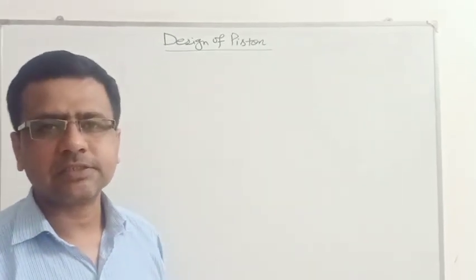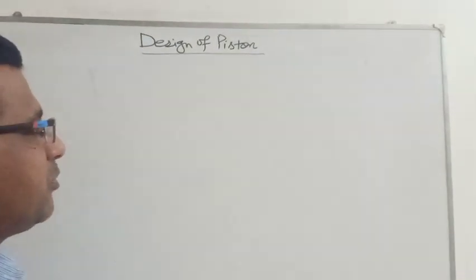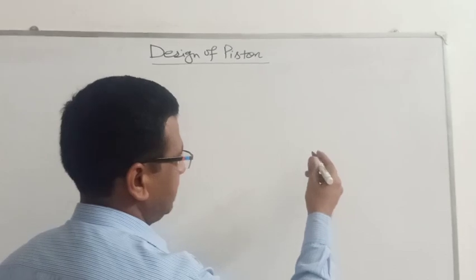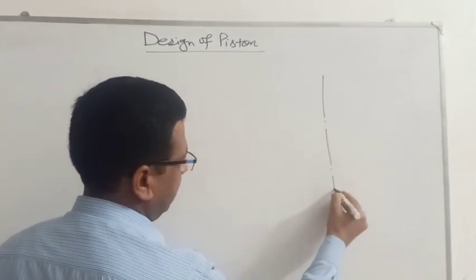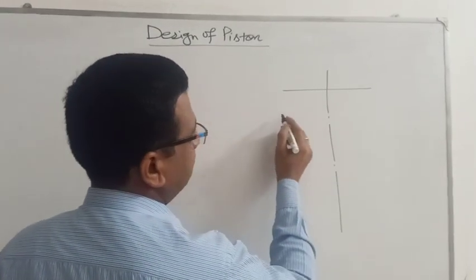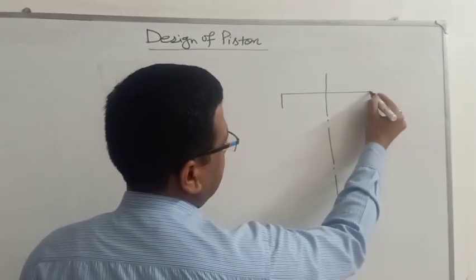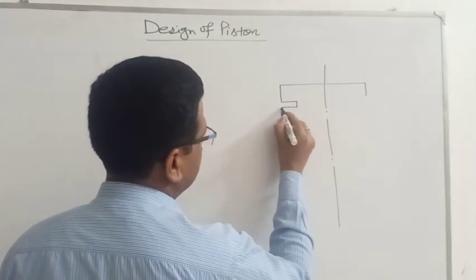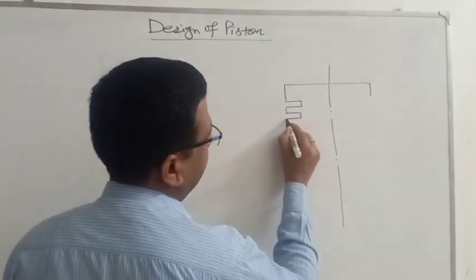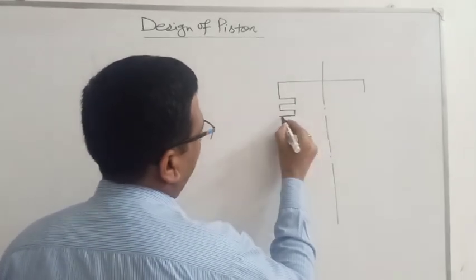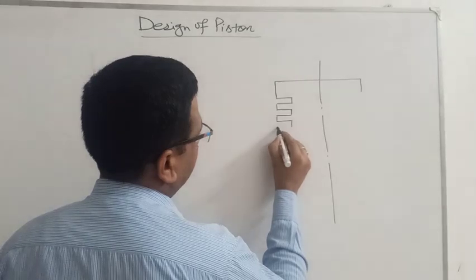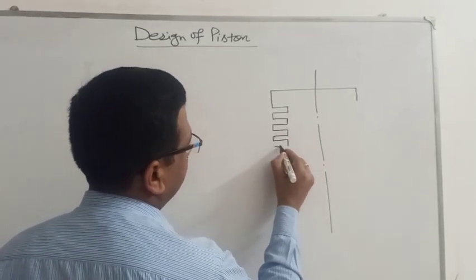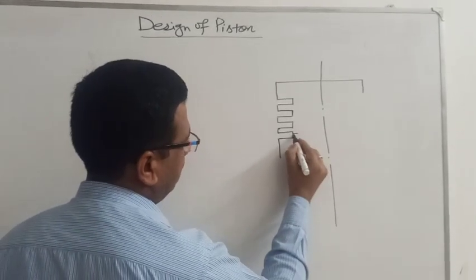Hello friends, today we will discuss the design procedure of a piston. Before we start the design procedure, let's have a look at the various parts of a piston. We are drawing a diagram for the piston. This is the center line of the piston, this is the top of the piston or piston head, and this depth is the top length. There are some grooves for the compression rings — first, second, and third — and grooves for the oil rings.